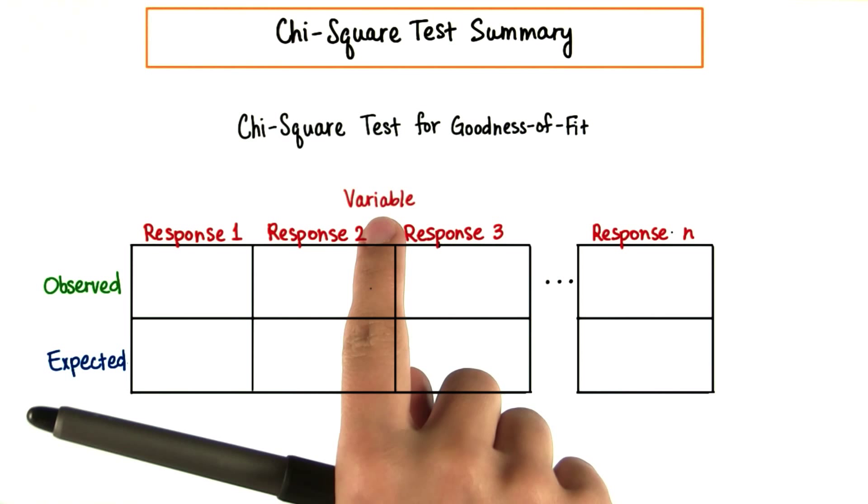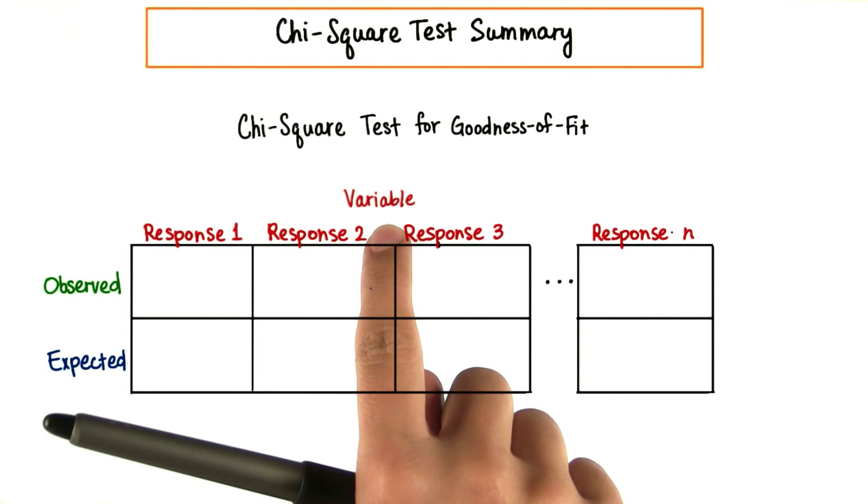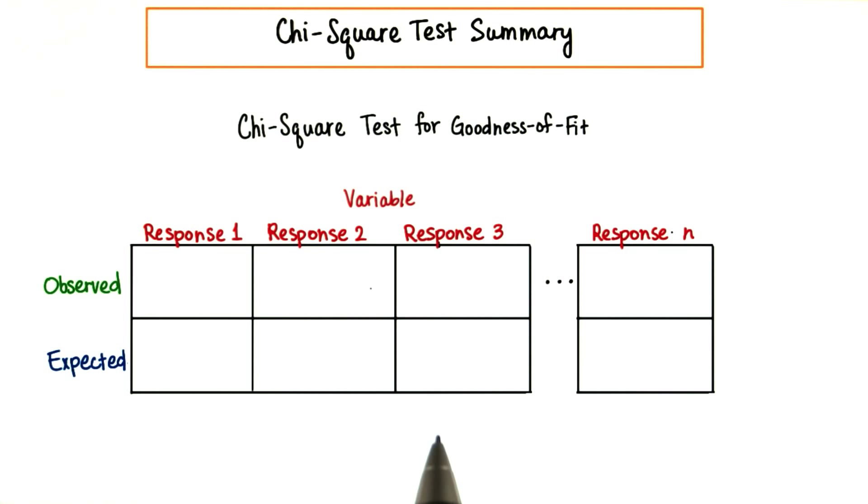In this case, we have some variable that's categorical. There are different responses for that variable.